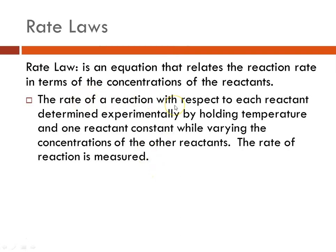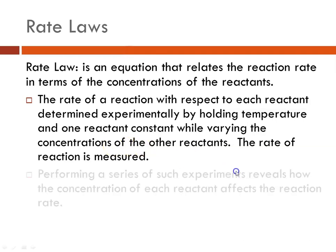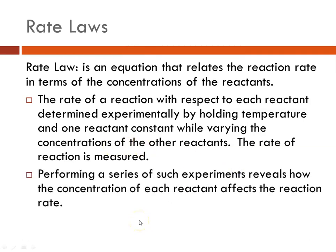The rate law is this equation that relates the rate to the concentrations of the reactants. The rate of a reaction with respect to each reactant is determined experimentally by holding temperature constant, and holding one of the reactants constant while varying the concentration of the other reactant or reactants, and then measuring the rate. You perform several experiments — at temperature x, say 25 degrees, you'll hold A constant and vary B, then hold B constant and vary A, and measure the rates.